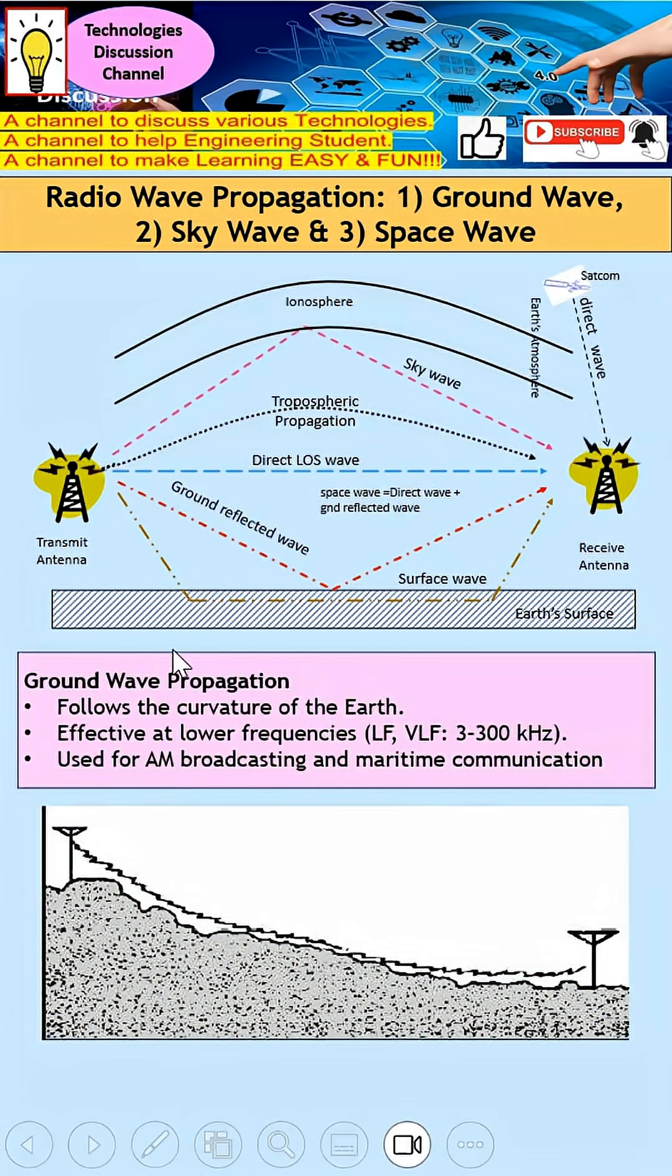Let's take a closer look at the three types. Ground wave propagation follows the curvature of the Earth. They are very effective at lower frequencies, typically low frequency or very low frequency from 3 to 300 kilohertz. They are mainly used for AM broadcast and maritime communication.